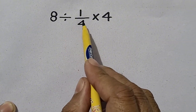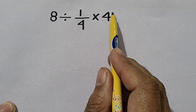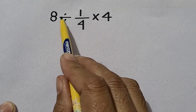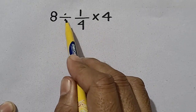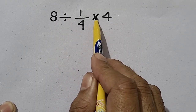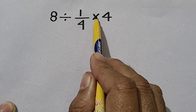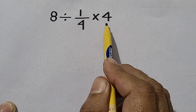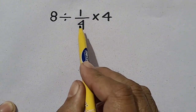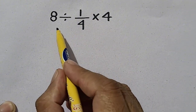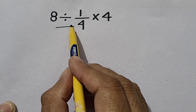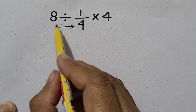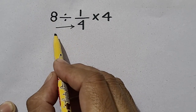When we cancel 4 and 4 it's wrong, because we have to solve division and multiplication — multiplication is performed secondly. So 4 and 4 can't be cancelled because we have to move from left to right.